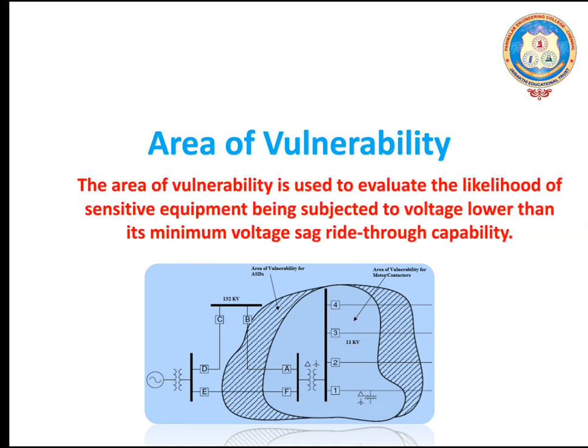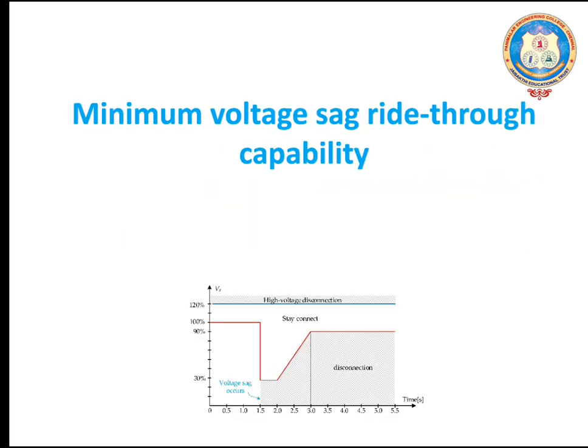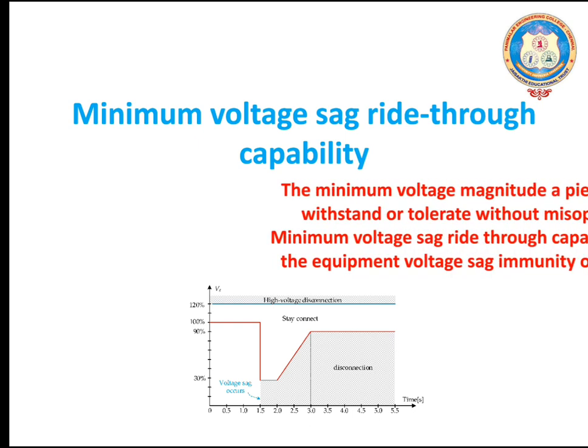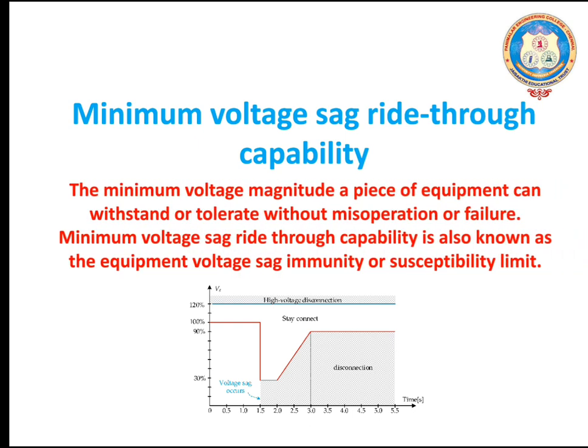The area of vulnerability is used to evaluate the likelihood of sensitive equipment being subjected to voltage lower than its minimum voltage sag ride-through capability. The minimum voltage magnitude a piece of equipment can withstand or tolerate without misoperation or failure is also known as equipment voltage sag immunity or susceptibility limit.